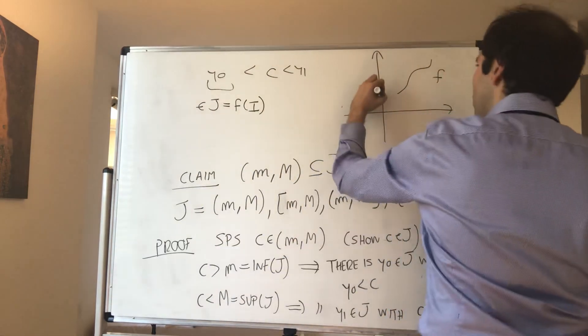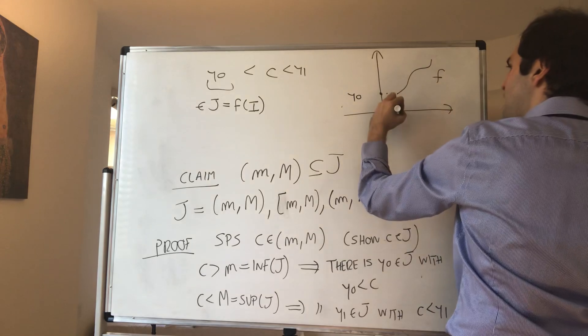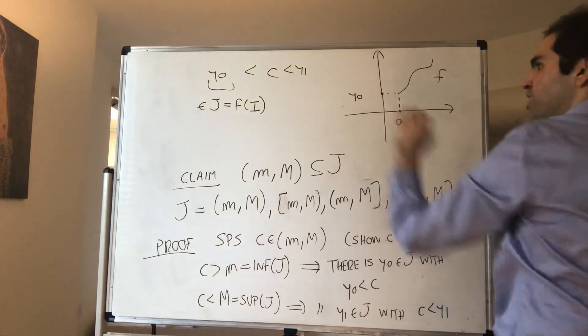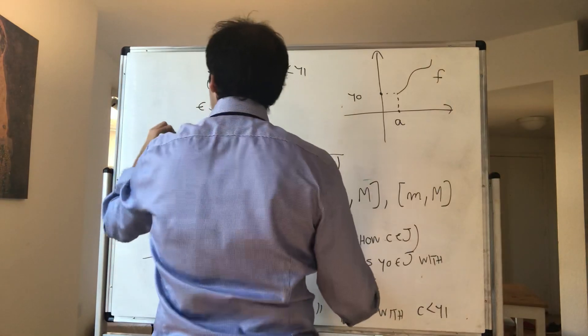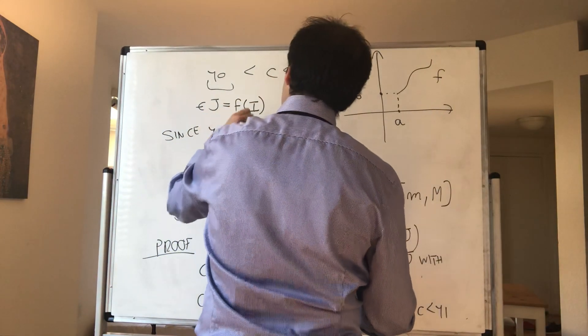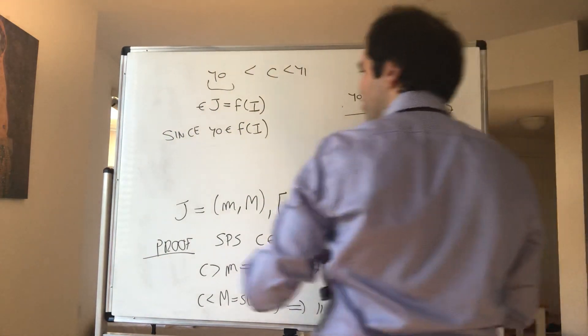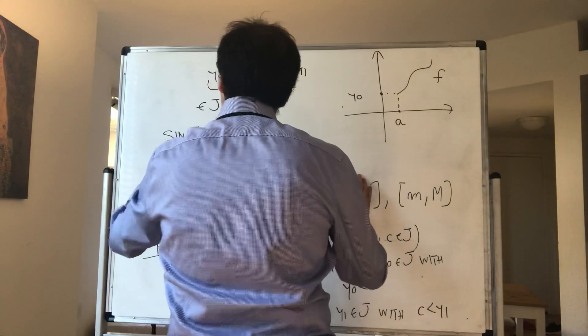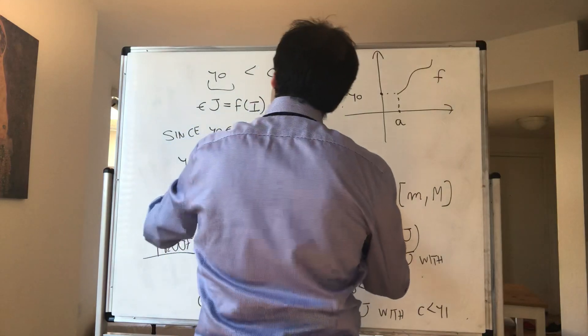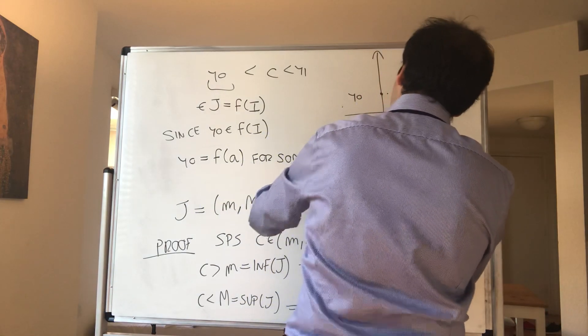And we know that y₀ is in J, is in f of I. So in particular, y₀ is in f of I, so there must be some a such that y₀ equals f of a. So since y₀ is in f of I, we know that y₀, again, just by definition of the range, y₀ equals f(a) for some a.